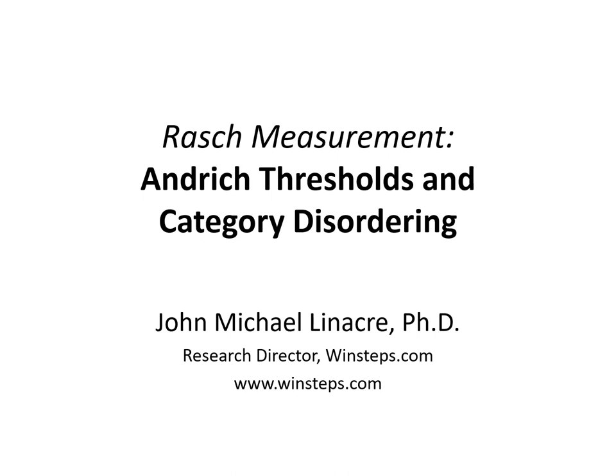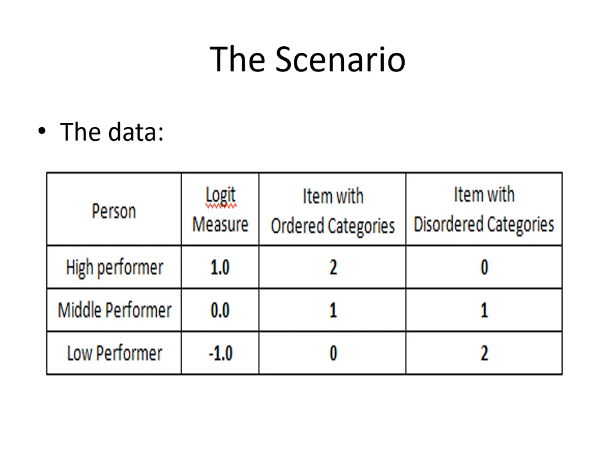Today we're going to discuss the contentious issue of the relationship between Andridge thresholds and category disorder. We're going to do this with just a very simple data set: two items. In this data set there are three persons — the high performer, the middle performer, and the low performer. They're anchored at one logit, zero logit, and minus one.